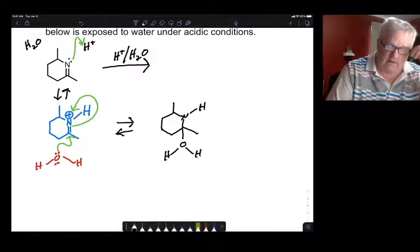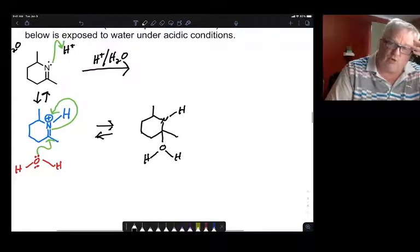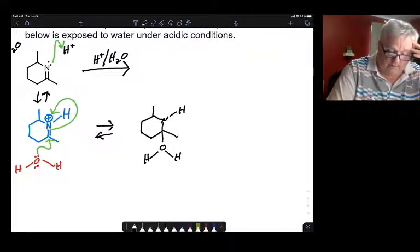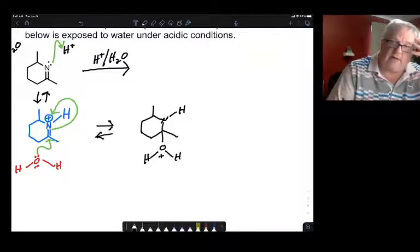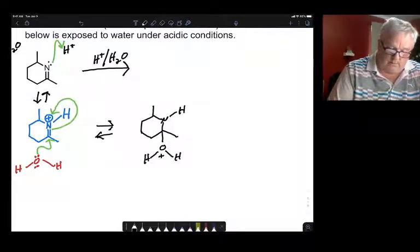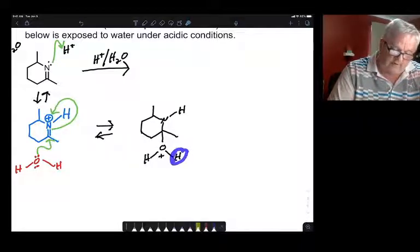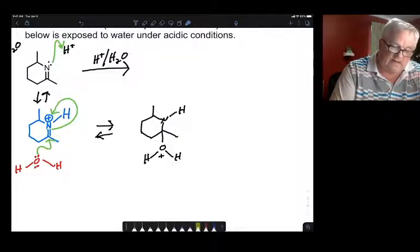So here we have the equivalent of an acetal. The equivalent of a hemiacetal, I suppose. Oh, let's not forget our positive charge on the oxygen. We have an amino alcohol, but all we're going to want to do now is move one of these protons from here to the nitrogen. And with it, the positive charge will go, and then you're going to want to break that bond. So see if you can get to the final product.